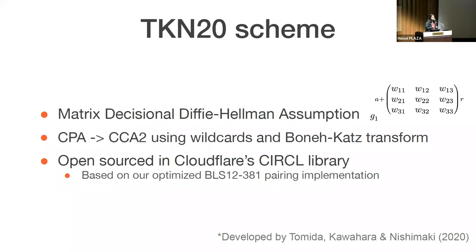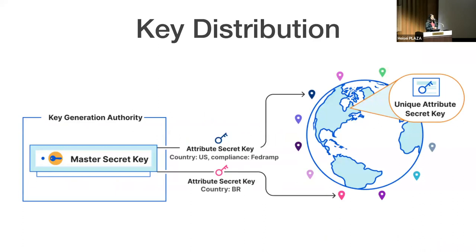TKN20 has matrices in the exponents, which leads to performance overheads. The second thing we did was transform from CPA to CCA security, which we accomplished using an internal wildcard and the well-known Fujisaki-Okamoto transformation. Finally, we open-sourced this into our cryptographic suites library, Circl. We implemented the scheme using our pre-existing pairings implementation for BLS12. An important note: you have to pick the right pairing curve and the right implementation for your use case, because since ABE is built on top of pairings, the baseline speed of your scheme is very closely related to how fast you can do pairing operations.